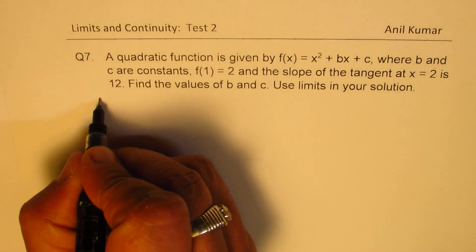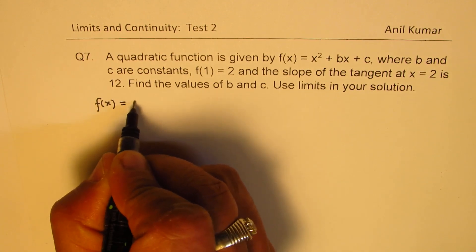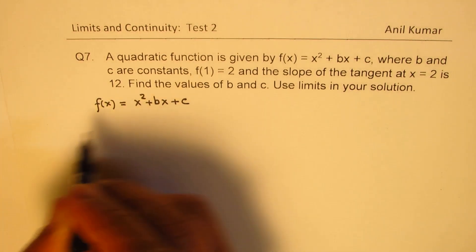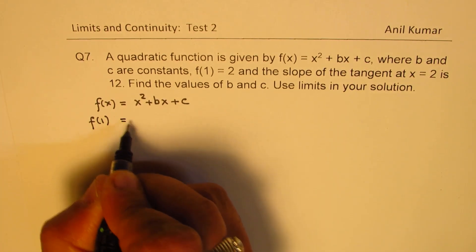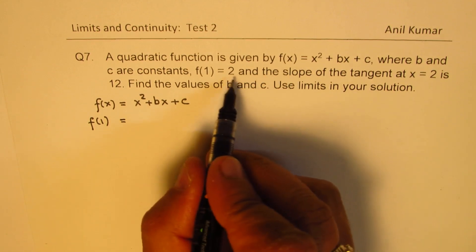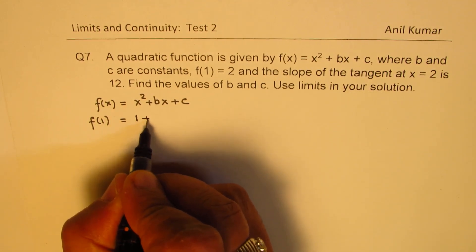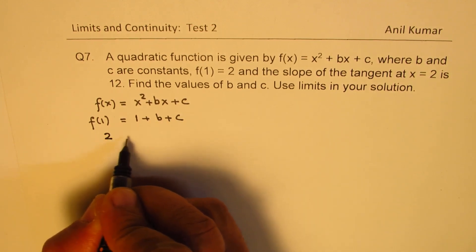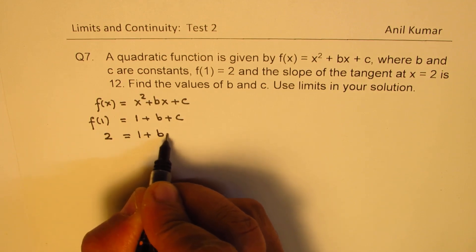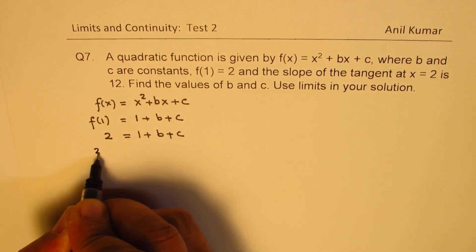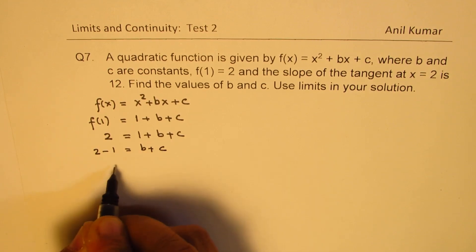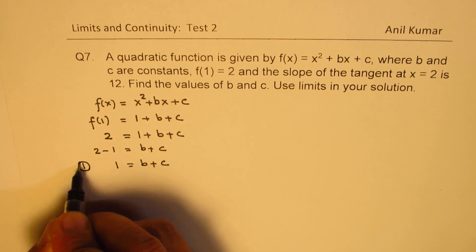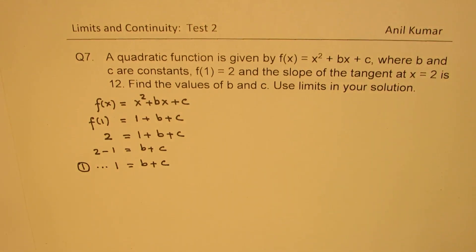Now we are given the function which is f(x) = x² + bx + c. At 1, that is f(1), we are given the value of the function which is 2. So if I substitute 1 here I get 1 + b + c and this value is 2. So we have 2 = 1 + b + c or 2 - 1 = b + c. So we get 1 = b + c. So that becomes one of the conditions.